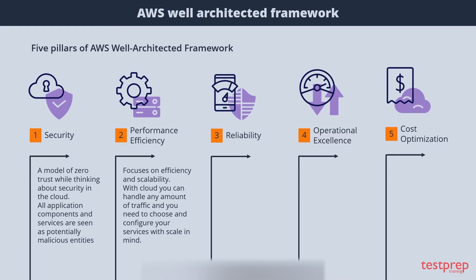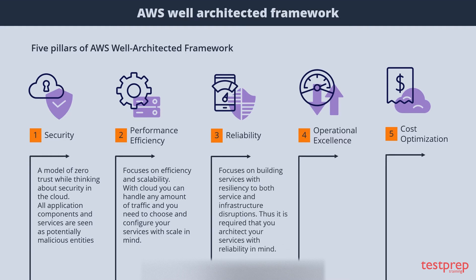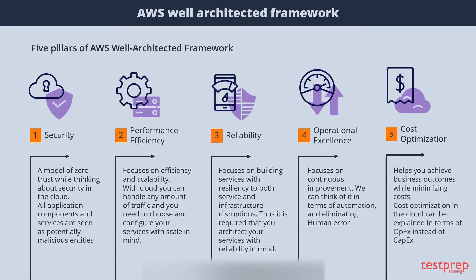The Reliability pillar focuses on building services with resiliency to both service and infrastructure disruptions, requiring that you architect your services with reliability in mind. The Operational Excellence pillar focuses on continuous improvement, which we can think of in terms of automation and eliminating human error. Cost Optimization means achieving business outcomes while minimizing costs, and can be explained in terms of OpEx instead of CapEx.